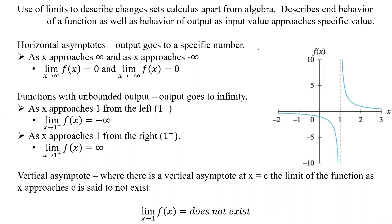At a vertical asymptote, where there's an x equals c, the limit of the function as x approaches c is said to not exist. We can't have x equaling 1. The limit of f(x) as x approaches 1 does not exist, because from the left we go to negative infinity and from the right we go to positive infinity. Because those are not equal, this limit doesn't exist.